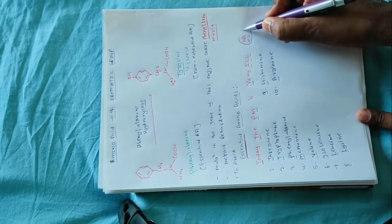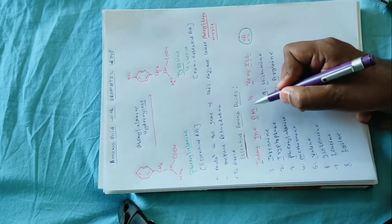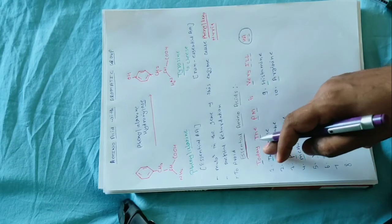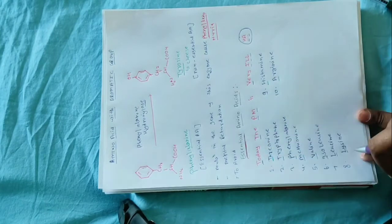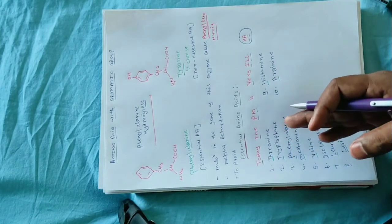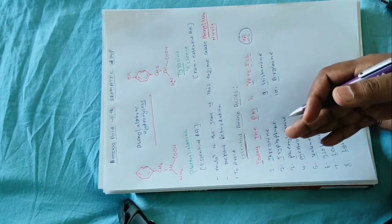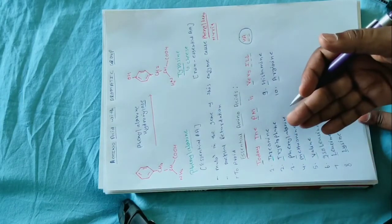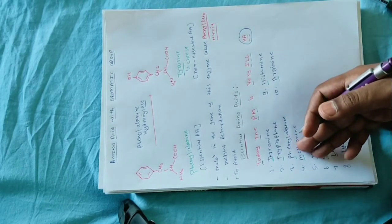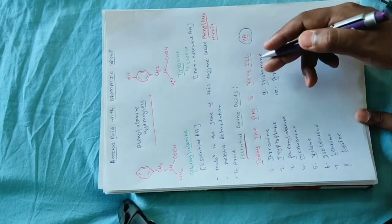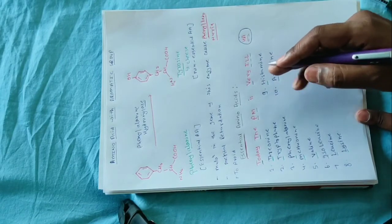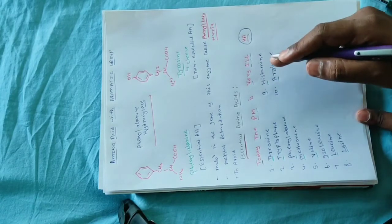यह जो starting की 'Today the PM is very ill' — यह जो 8 elements हैं, इनकी requirement हमें growing phase में यानि adult phase में होती है। और यह जो last 2 elements हैं — H और A — इनकी requirement तब होती है जब children की growth हो रही होती है।